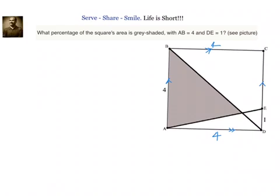Because the square is a parallelogram, once parallel lines are there, we automatically have similar triangles. We have this angle equal to this angle, and this angle equal to this angle, because of alternate interior angles. We also have vertically opposite angles.